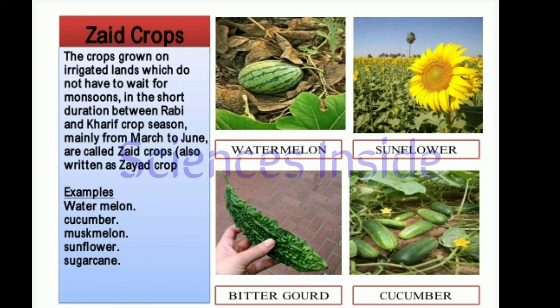There is also a third category of crops called zaid crops. These crops are grown on irrigated lands that do not have to wait for monsoons. They are grown in the short duration between rabi and kharif seasons, mainly from March to June. Examples include watermelon, cucumber, musk melon, sunflower, and sugarcane.